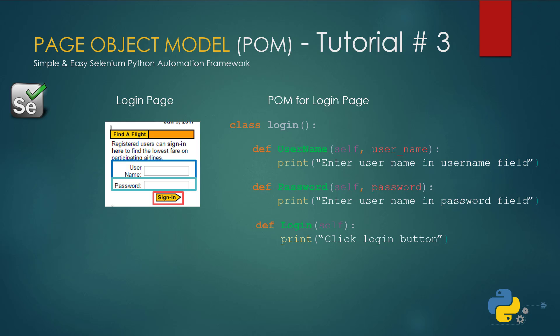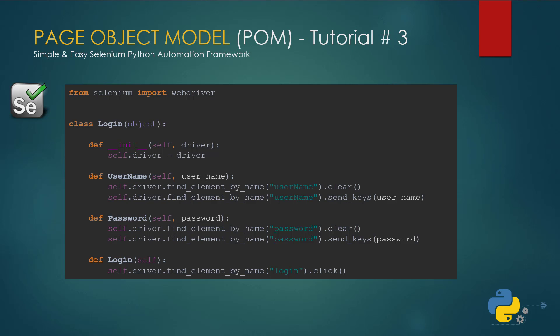So here is a very simple example of Page Object Model - that's what it is. You'll create a class for the login page, and for each element you're going to interact with you need to create a method. In that method you will enter your code. As you can see, username and password methods take a parameter, where the sign-in method doesn't take any parameter. You can ignore the 'self' keyword - it is similar to the 'this' keyword in other languages.